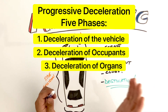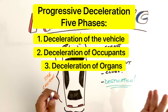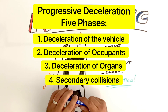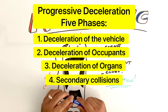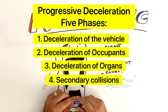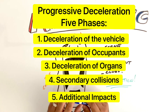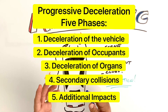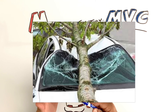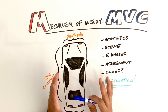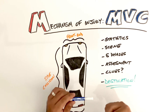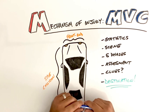Third is the deceleration of the internal organs. Once your patient hits the steering wheel, everything continues to move and the organs are going to directly decelerate. Then we have secondary collisions, which occur when occupants inside the vehicle are hit by objects moving within the vehicle — hopefully not a bowling ball collection in the back seat. The fifth and final phase is additional impacts the vehicle may receive, such as getting hit by a second vehicle or tree limbs falling on it. All of this should factor into what you're considering while assessing the scene and what damage could have been done to the patient.